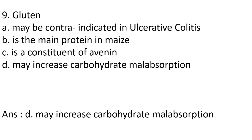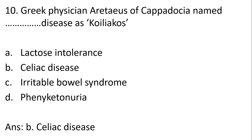MCQ 10: Greek physician Aretaeus of Cappadocia named the disease as koliakos. Options: A) lactose intolerance, B) celiac disease, C) irritable bowel syndrome, D) phenylketonuria. Answer: B, celiac disease. That is all about gluten. Thank you. If you like this channel, please share and subscribe, and don't forget to click the bell button to get notifications.